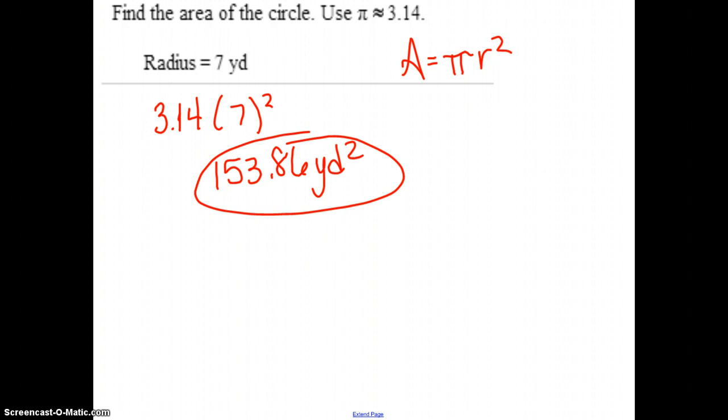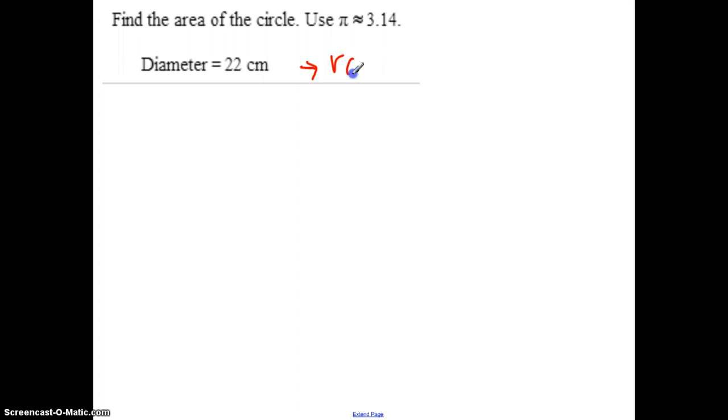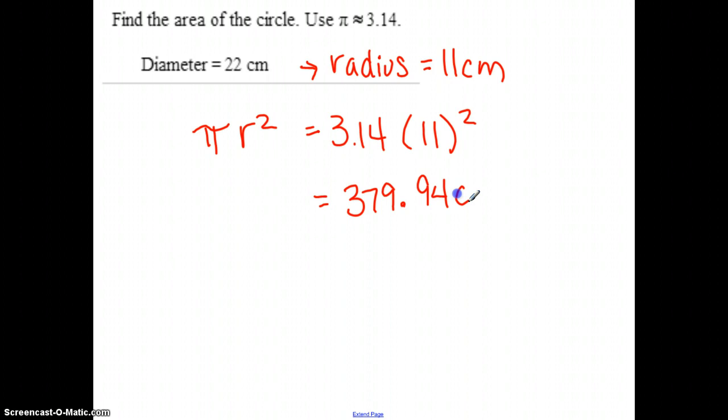Now, if they ask you to find area and they give you diameter, remember radius is half of this. So that means the radius would be 11 centimeters. Then I would use pi r squared. So 3.14 times 11 squared, which ends up being 379.94 centimeters squared.